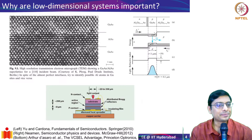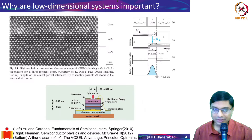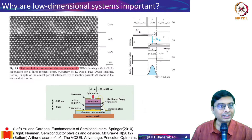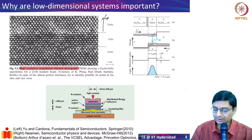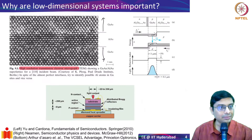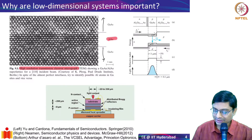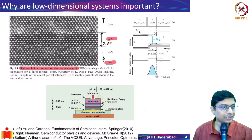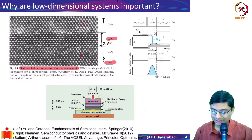Why are low dimensional systems important? The image on the left is a high-resolution transmission electron micrograph — a TEM image. It shows a layer of aluminum arsenide sandwiched between two gallium arsenide layers. Looking at the scale bar, this is one nanometer, so the aluminum arsenide region is only about two nanometers. You can actually count the atomic layers: one, two, three, four, five, six — six atomic layers of aluminum and arsenic.